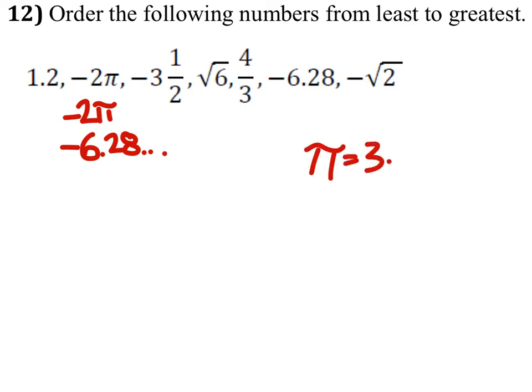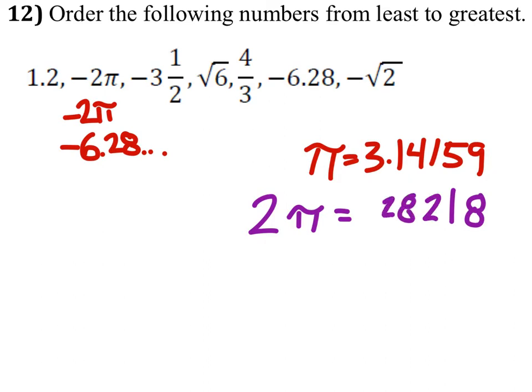π equals 3.1415, we'll just say niner. And if we multiply that number by 2, which would be 2π, it would be an 8 and a 1, carry the 1, and a 2, and an 8, and a 2, and a 6.